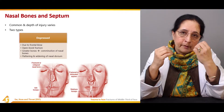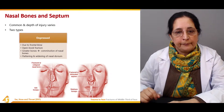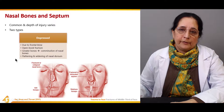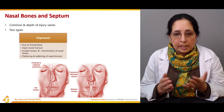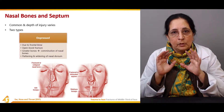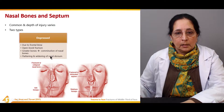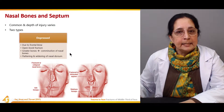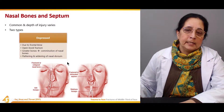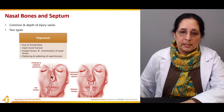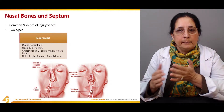A blow from the front mainly causes the depressed type of fracture, also called an open book fracture. Like opening a book, the fracture spreads open, involving a combination of nasal bones with flattening and widening of the nasal dorsum — it becomes wide open, like an open book fracture.